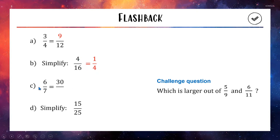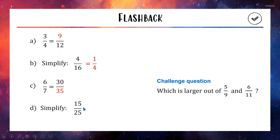Question C is pretty similar to question A: 6 turning into 30 is being multiplied by 5, so we'll multiply the bottom by 5 and 5 times 7 is 35. For question D, the greatest common factor of 15 and 25 would be 5 — there are three of them on top and five down below, so we get 3 out of 5.